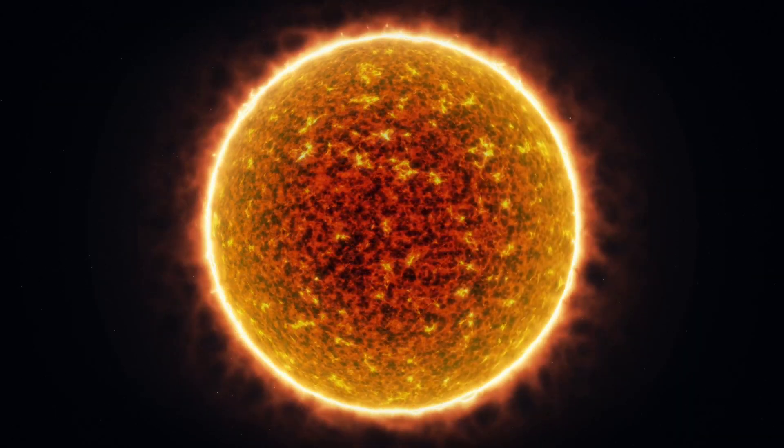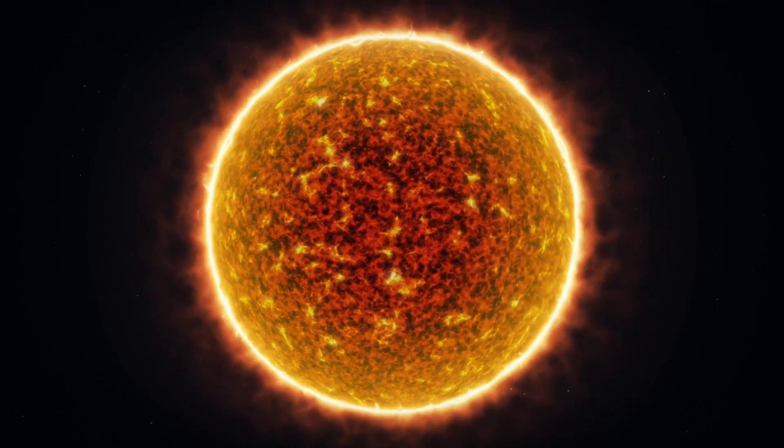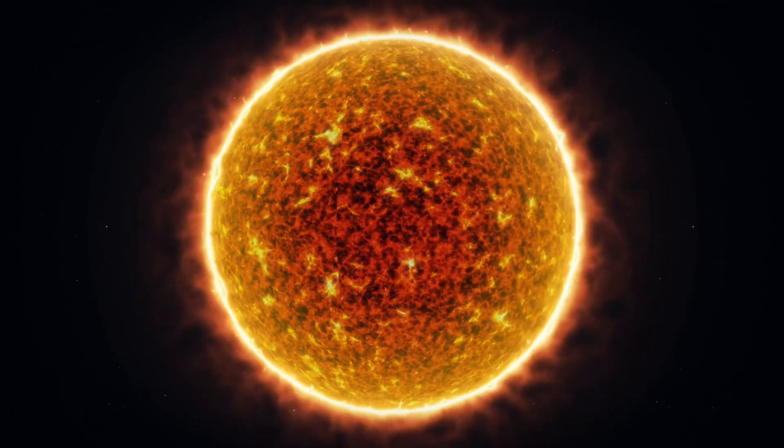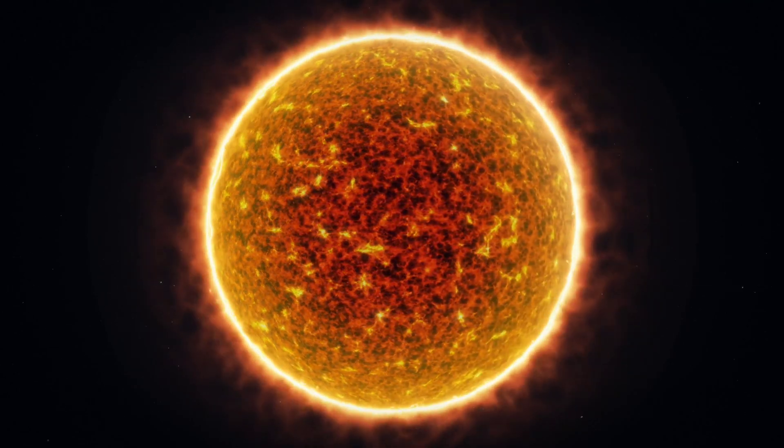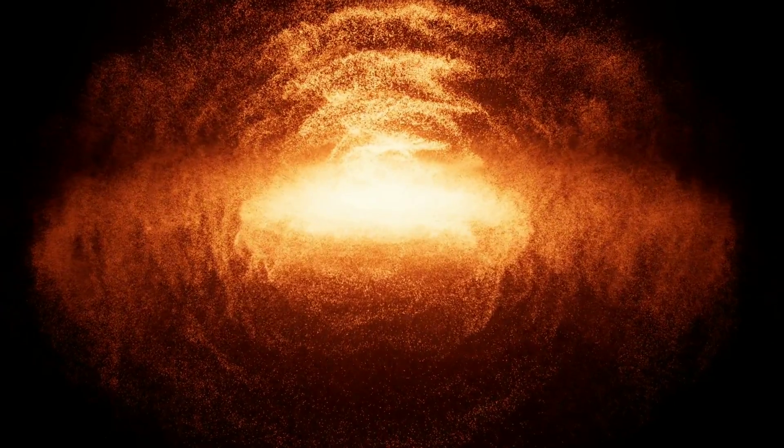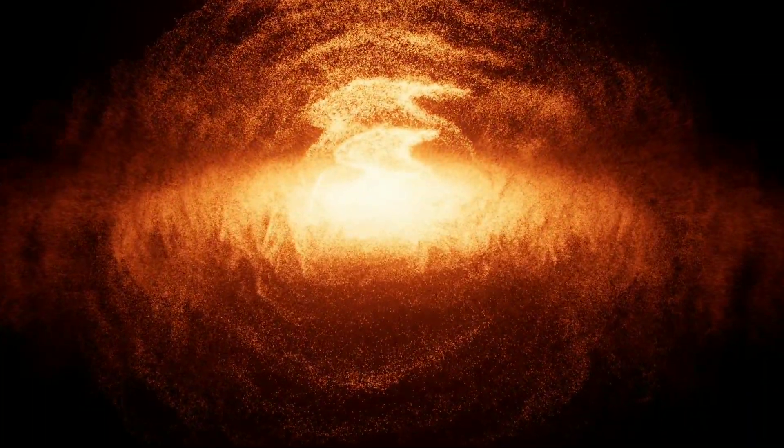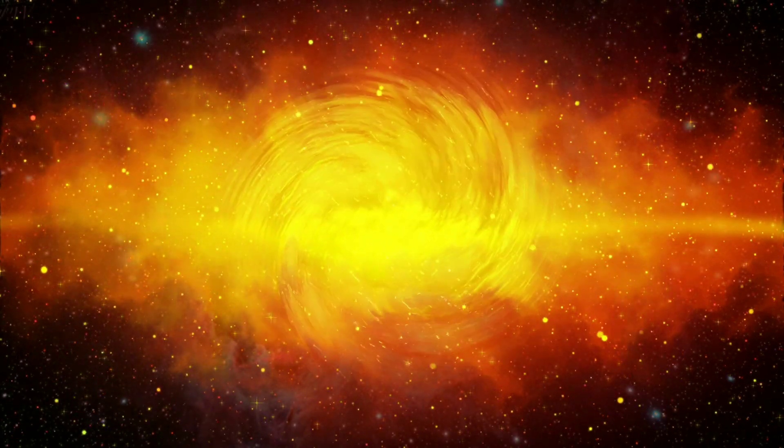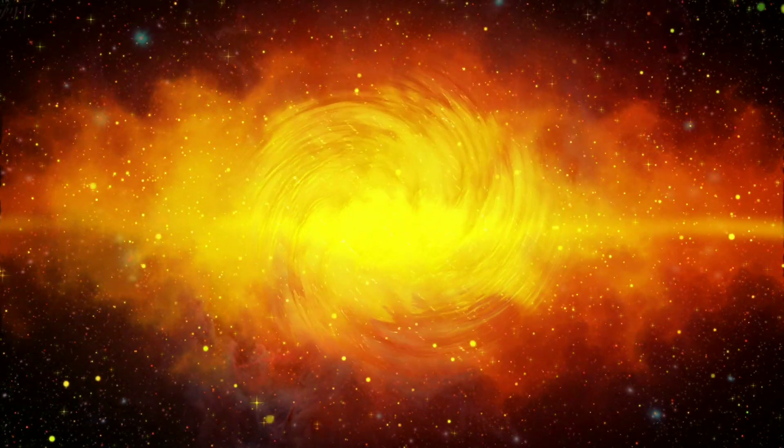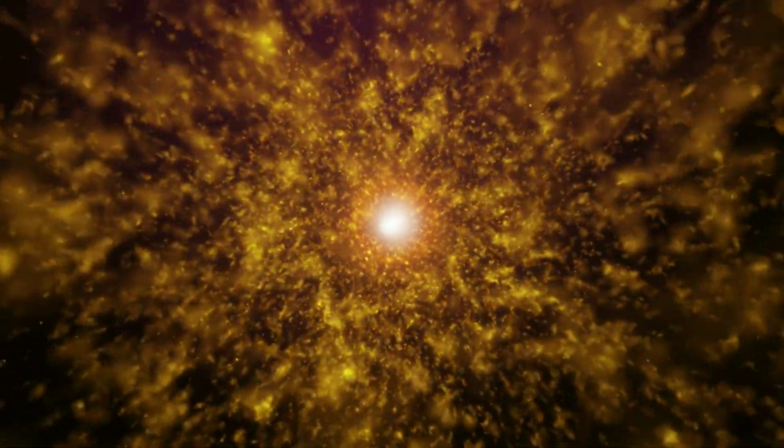A protostar is formed as gravity begins to pull the gases together into a ball. This process is known as accretion. As gravity pulls the gases closer to the center of the ball, gravitational energy begins to heat them, causing the gases to emit radiation. At first, the radiation simply escapes into space. However, as the protostar pulls in matter and gets more dense, much of the radiation becomes trapped inside, heating the protostar even more quickly.